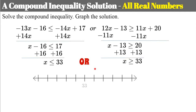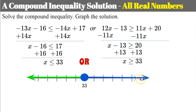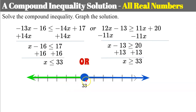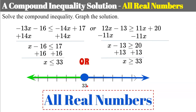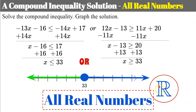Let's graph this. I only need one value since both are 33. A closed circle with solutions to the left, and a closed circle with solutions to the right because it's greater than. The entire number line is shaded. Because it's an OR — a union — any value on the number line is a solution to one or the other. My solution is all real numbers. There's also a symbol for all real numbers: a double-lined R.